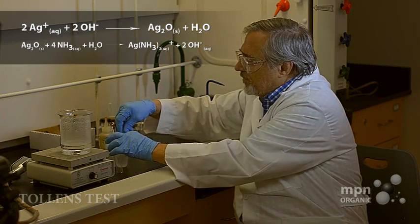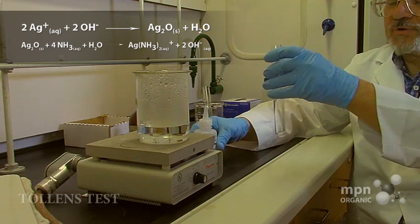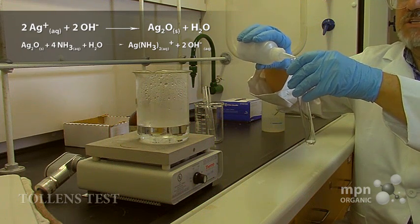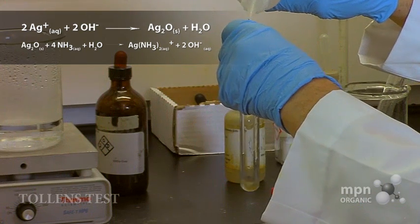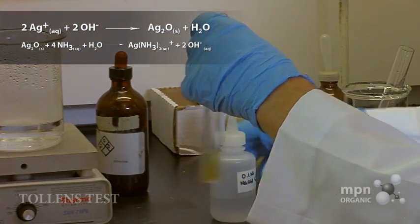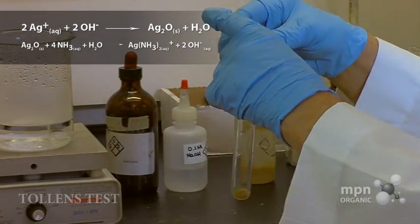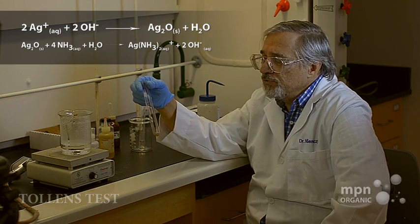And we're going to put in a couple drops of sodium hydroxide. For all of you who have taken qualitative analysis in general chemistry, you'll know that what happens when we add sodium hydroxide to silver nitrate is we form silver oxide, Ag2O.